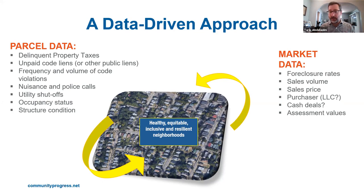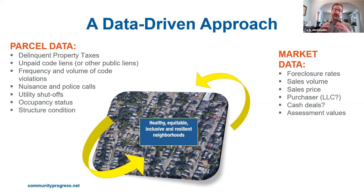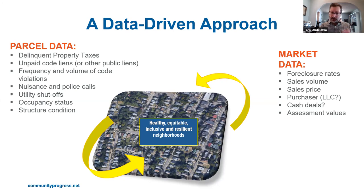At the same time, we want to understand market data. We know that unjust housing, lending, and land use policies shaped the trajectory of our neighborhoods with great disparities between them. There are many communities with hot market neighborhoods right next to struggling or weak housing market neighborhoods. It's important to understand those market conditions because we don't want to apply strategies universally across all neighborhoods. An aggressive traditional code enforcement practice may work well in a strong housing market, but could actually exacerbate vacancy and harm vulnerable homeowners in weak housing markets.